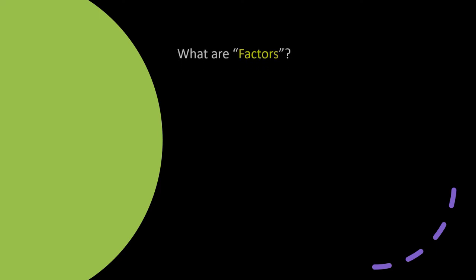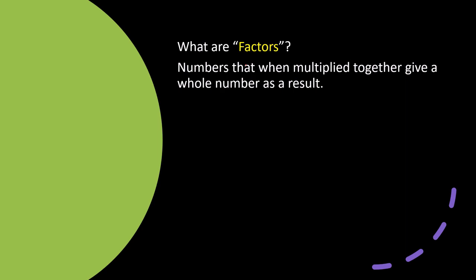Another thing you'll be asked on your GED exam is to identify factors. What are factors? Factors are numbers that, when we multiply them together, give us a whole number result — not a decimal. This is different from simply categorizing numbers as odd or even. The GED will ask you to factor a given number.